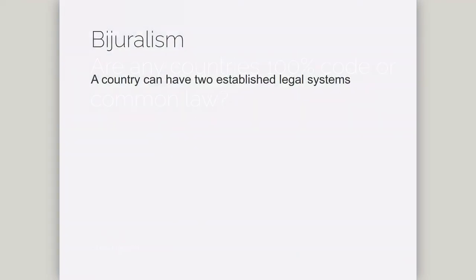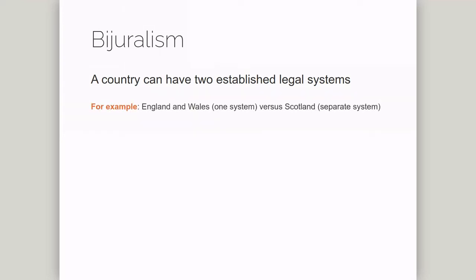First, some countries are bi-jural. This means that a given country might contain two established and separate legal systems. Often this is because different parts of the country have different histories. I've talked about England as being a common law system, and that's correct. But it would be incorrect to say that the UK as a whole is purely a common law system.